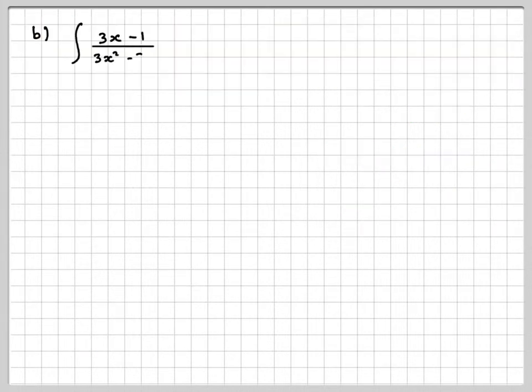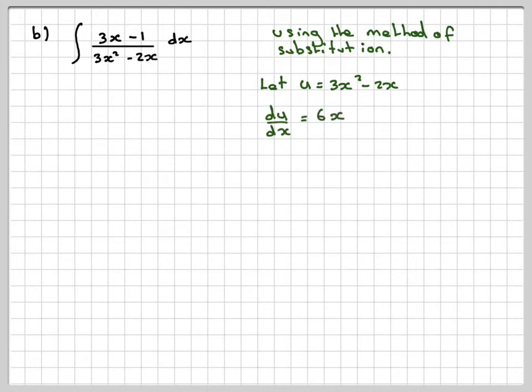Okay, I'm going to let u be equal to the denominator. So if I let u be equal to 3x squared minus 2x, and I differentiate it, du by dx will be 6x minus 2.